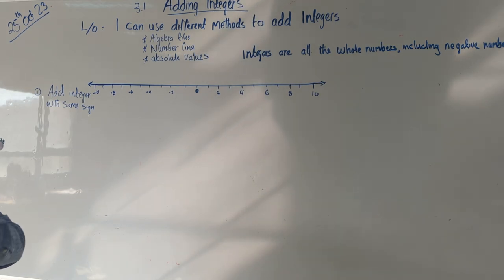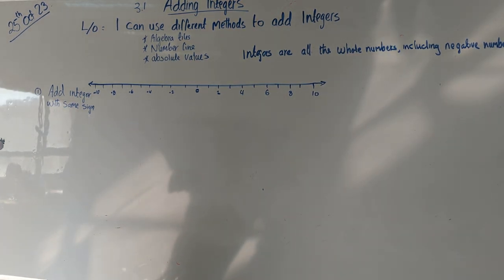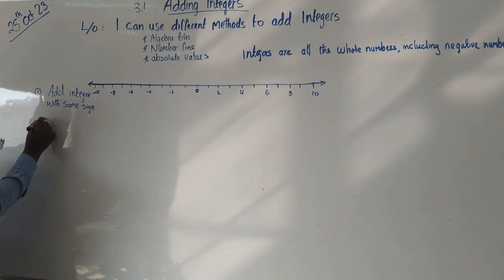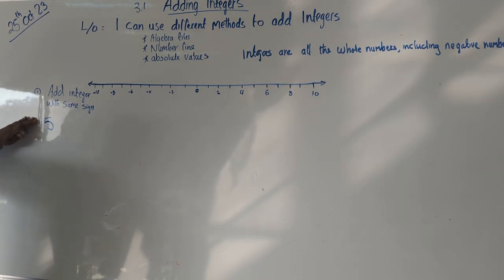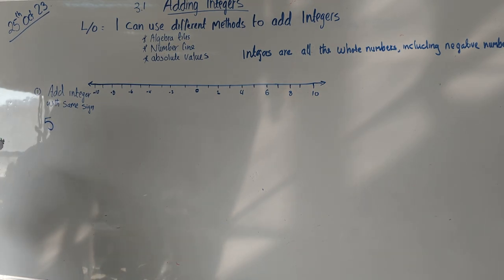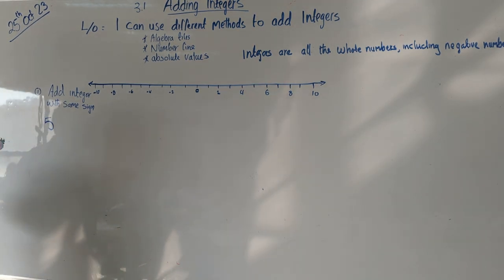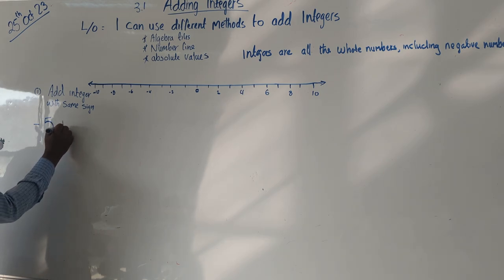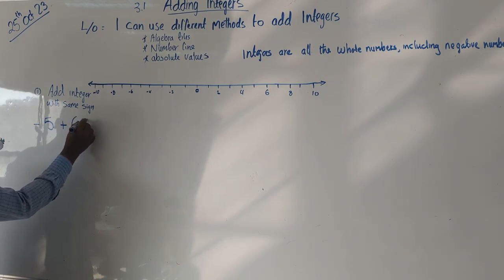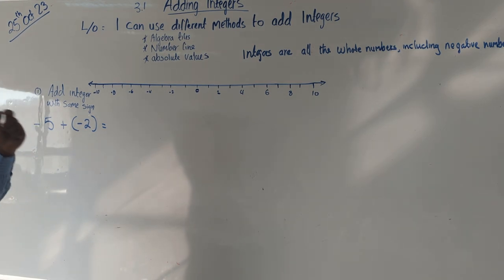Some numbers will have a negative sign and some will have a positive sign. Remember, the sign of the number will always be on the left-hand side. For example, negative 5 — that number is negative. But if I just write down 5, that's a positive. Usually, especially when the number is at the beginning, we don't write down the plus sign.